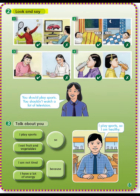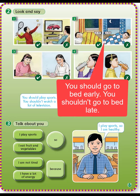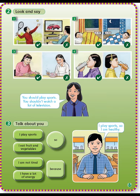To look and say, page 57. You will look at these pictures, after that you will use should and shouldn't to describe these pictures. ستنظرون إلى هذه الصور ثم ستصفون ما موجود في الصورة باستعمال should and shouldn't. المثال موجود: you should play sports, you shouldn't watch a lot of television. نتفرج على الصورة الثانية: you should go to bed early, or you should go to bed at 8 o'clock. You shouldn't go to bed late, or you shouldn't go to bed at 11 o'clock.